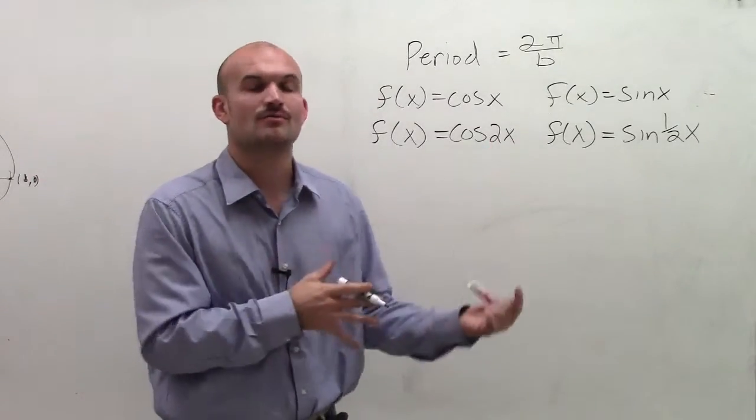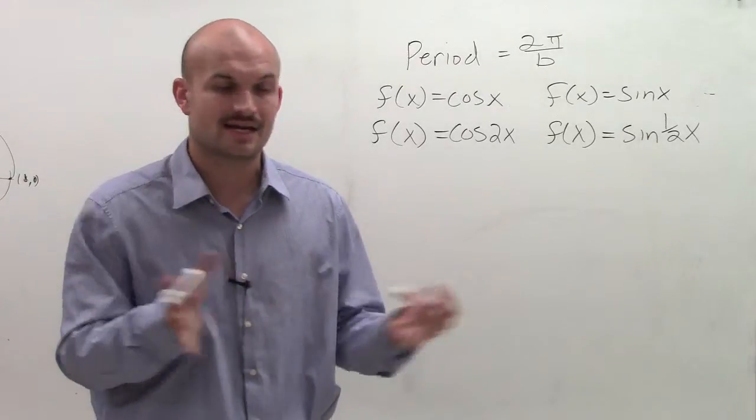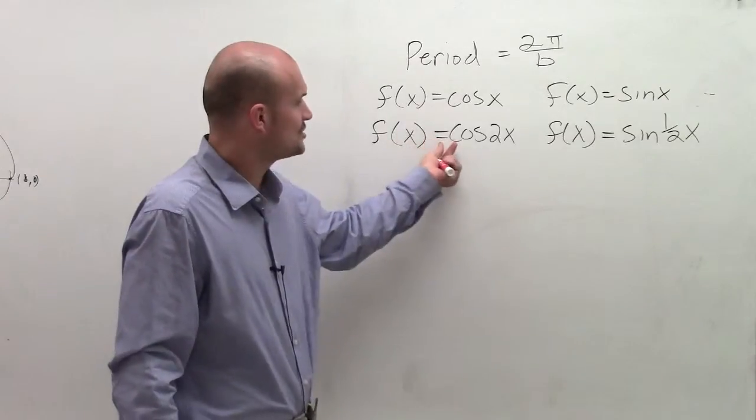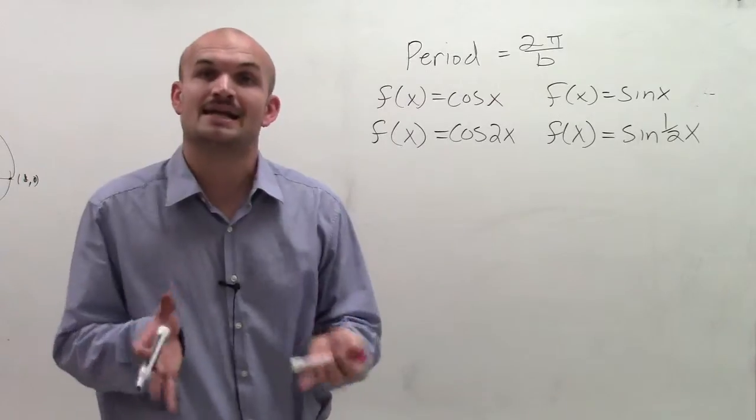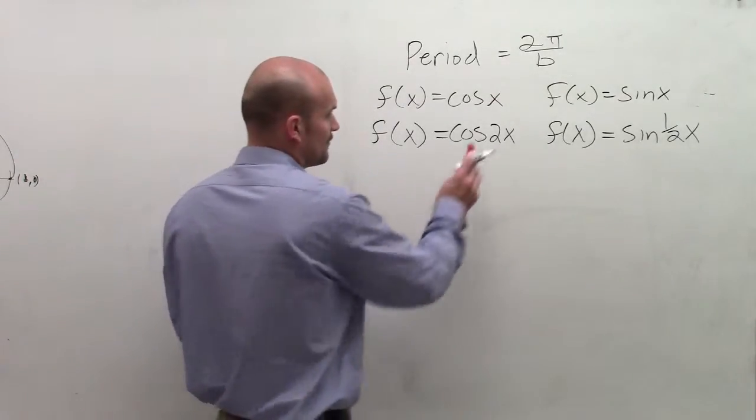b is going to be the number that you're going to multiply inside your function. If you watch the video on the formal definition of a function for sine and cosine, you can see where a and b are. But remember, a is your amplitude, the number you multiply outside your function. And b is going to be the value that you're multiplying inside your function.